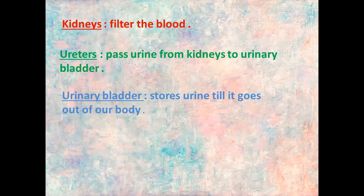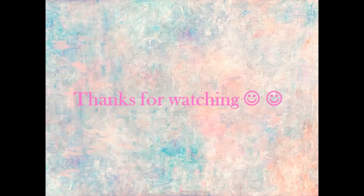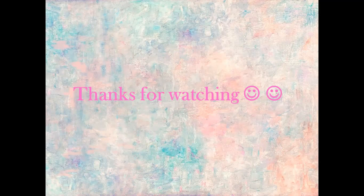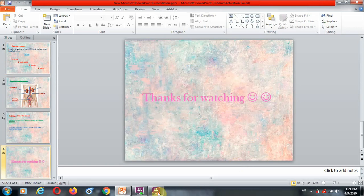To summarize: kidneys filter the blood — that's why they are the most important organs in the urinary system. The two ureters, the two long and thin tubes, pass the urine from the two kidneys to the urinary bladder. And the urinary bladder stores this urine until it goes out of our body. That's it for today — we've finished the lesson on the urinary system. Thank you for watching and see you next video. Bye.